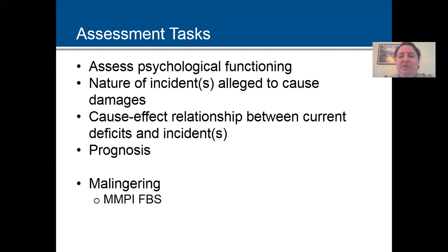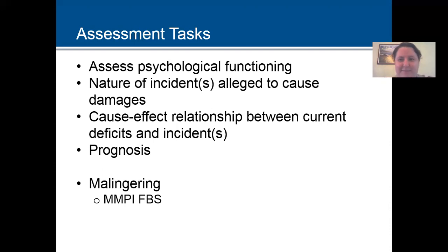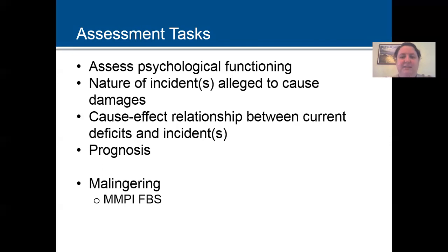Malingering will almost always be an issue you have to address in personal injury cases. The FBS, or Fake Bad Scale, of the MMPI was specifically designed to help identify people malingering in personal injury cases, so pay special attention to this. However, it doesn't work well in identifying emotional malingering — it's more likely related to genuine distress, but it's great for the defense. They can try to use it, but you have to educate juries about the fact that it doesn't actually work the way it's supposed to.